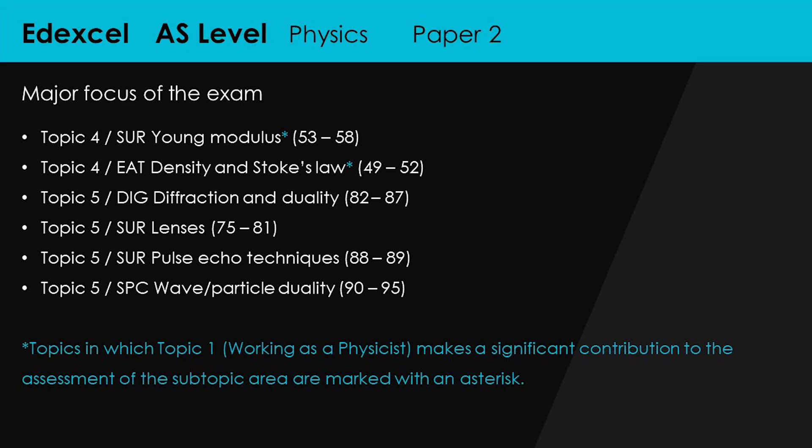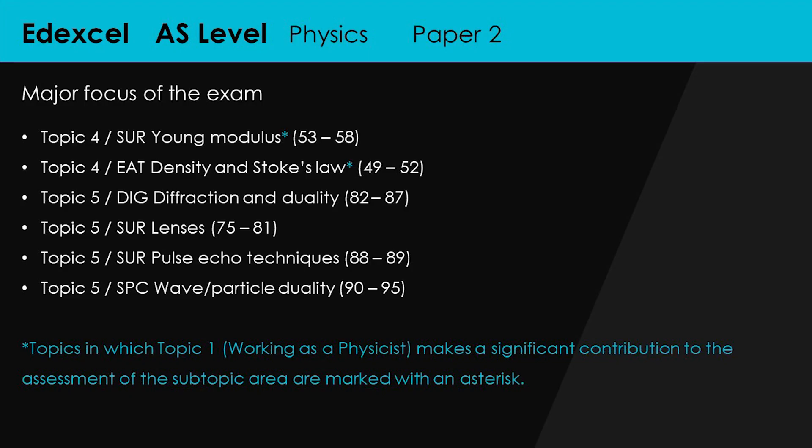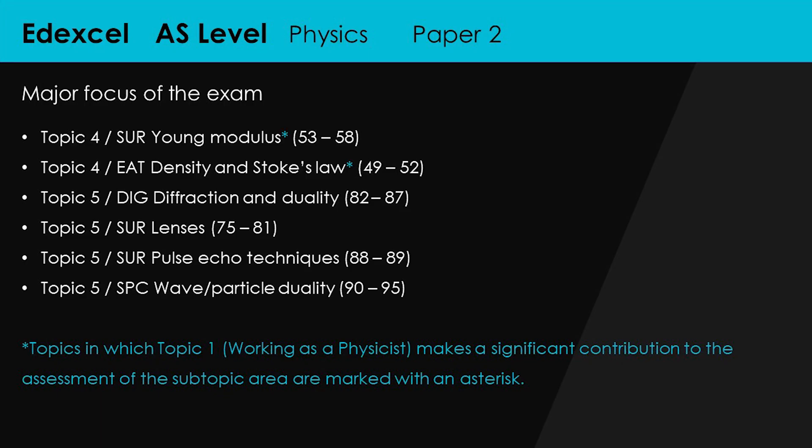For paper 2, you need to know about the Young's modulus — measuring it using a wire across the table or a hanging wire with a vernier scale to look at small deflection. Topics marked with an asterisk indicate that Topic 1 'working as a physicist' makes a significant contribution to the assessment, so there'll be lots of practical-style questions about how to plan and carry out an investigation. That also applies to density and Stokes' law — I've got a video explaining how to use Stokes' law to measure the viscosity of a liquid. Then there's diffraction, lenses, pulse echo technique, and wave-particle duality. You still need to revise everything you've covered in year 12.